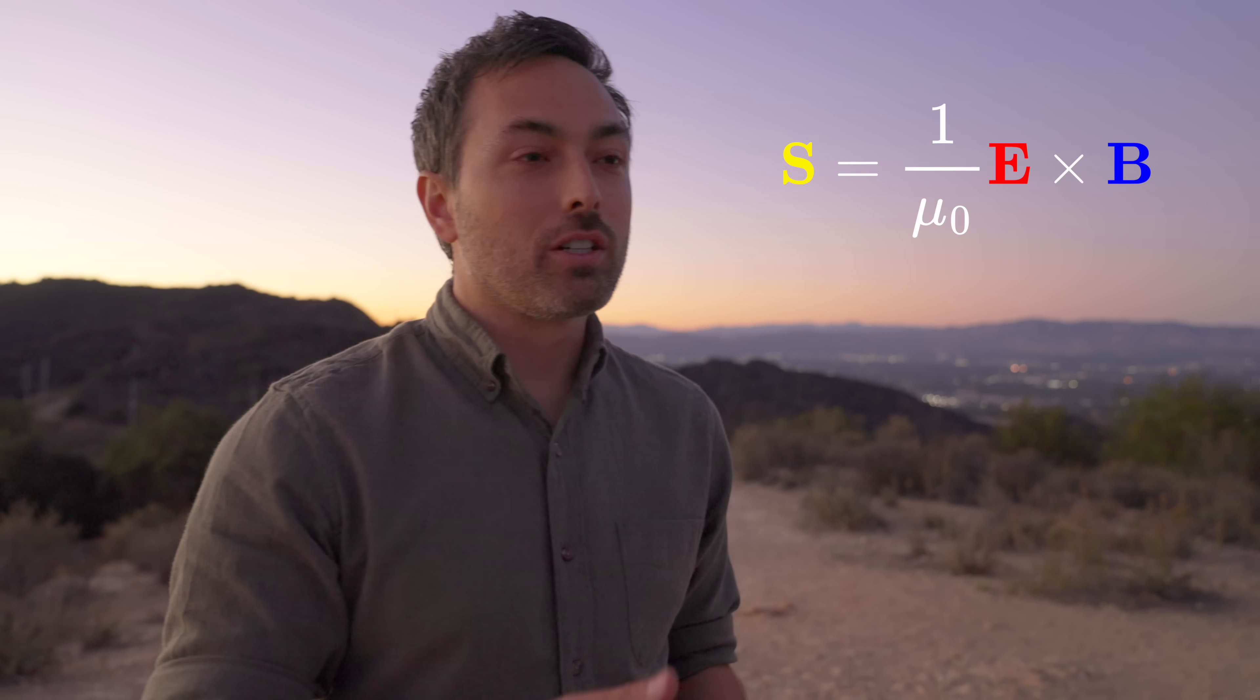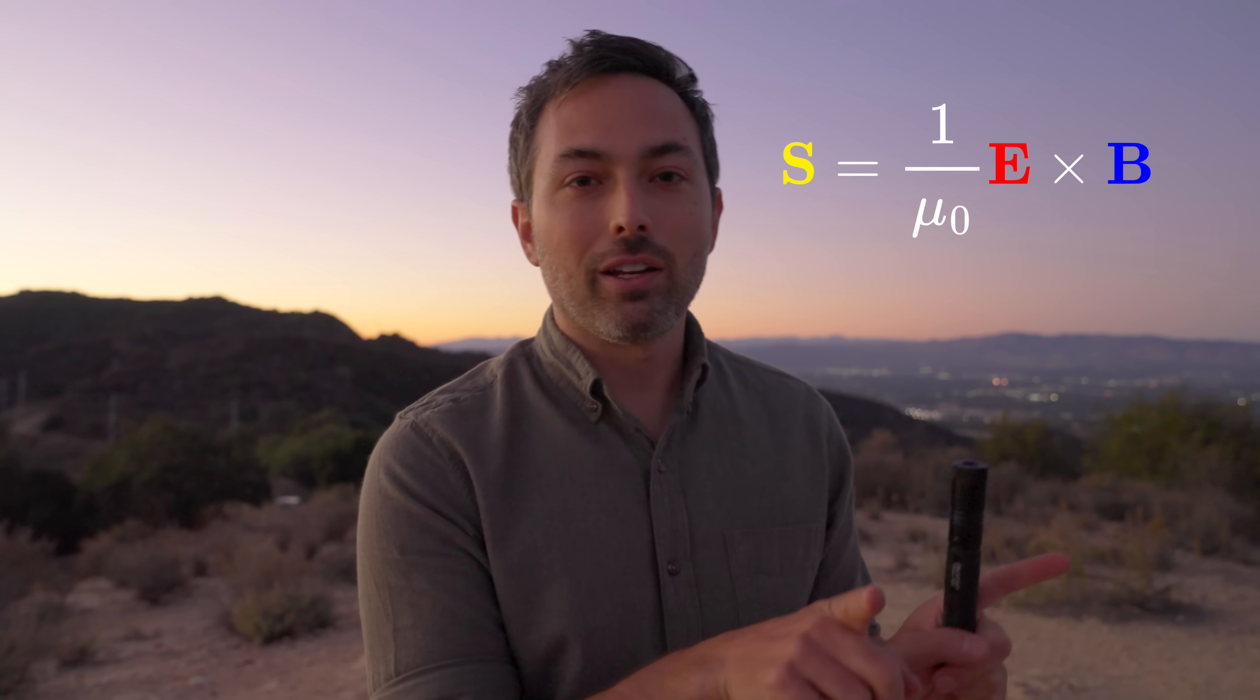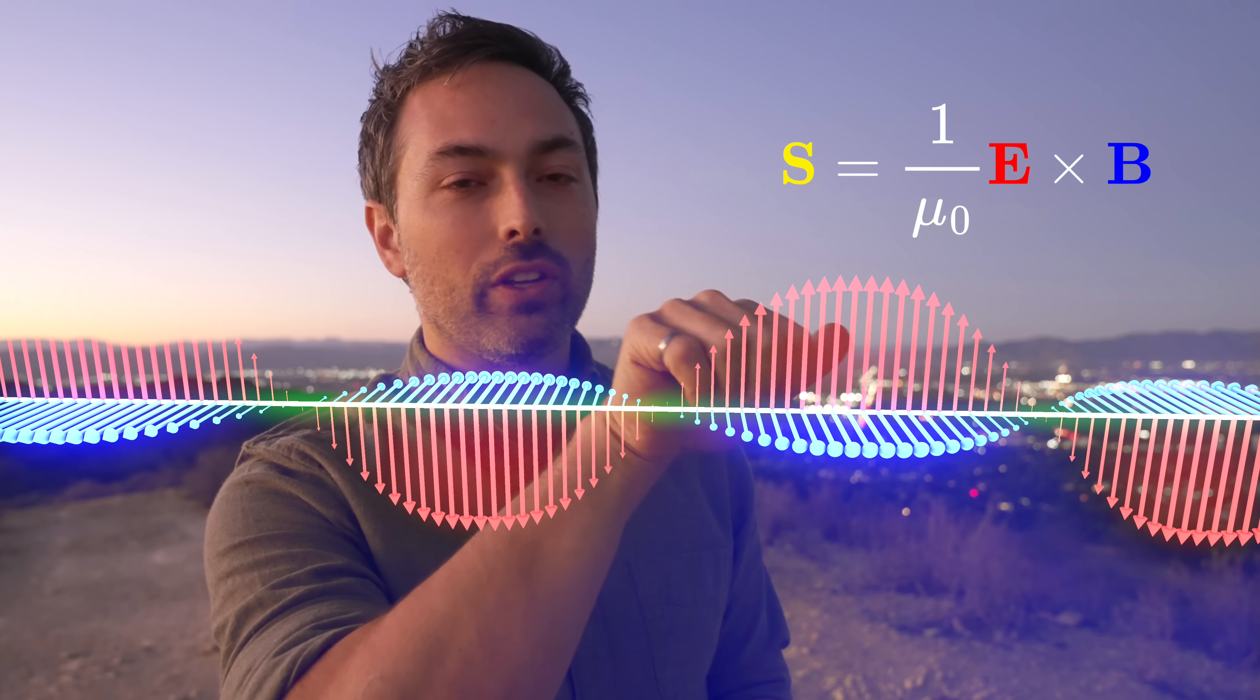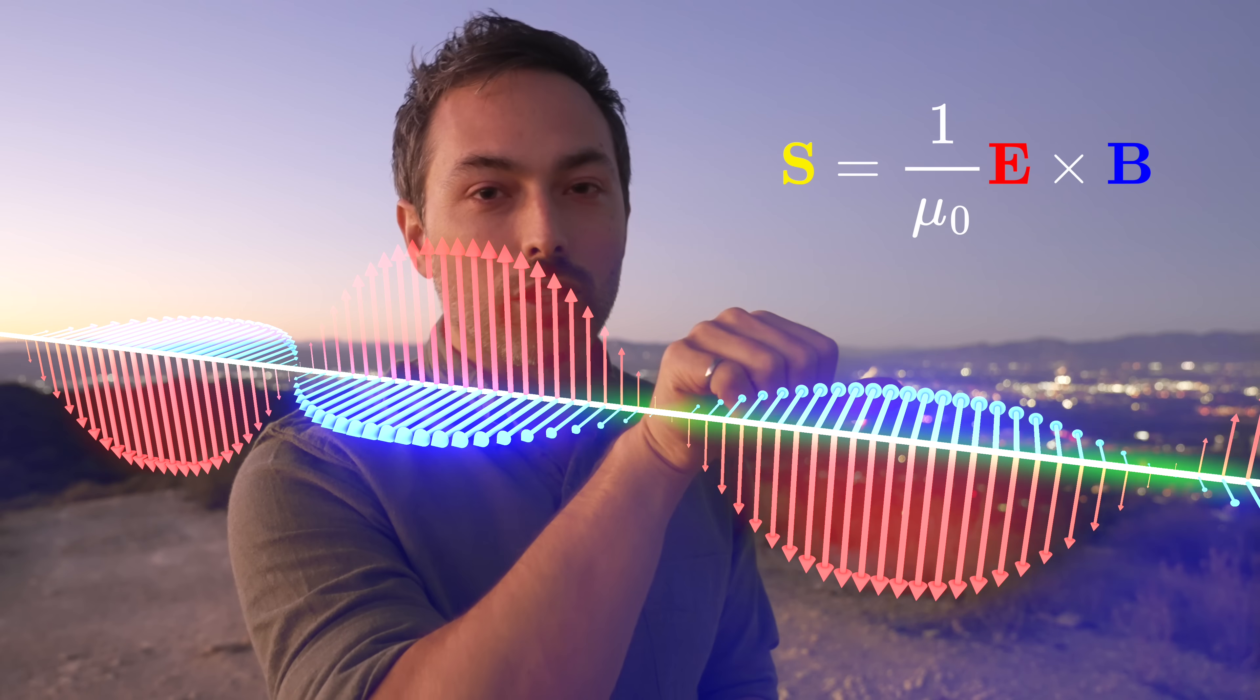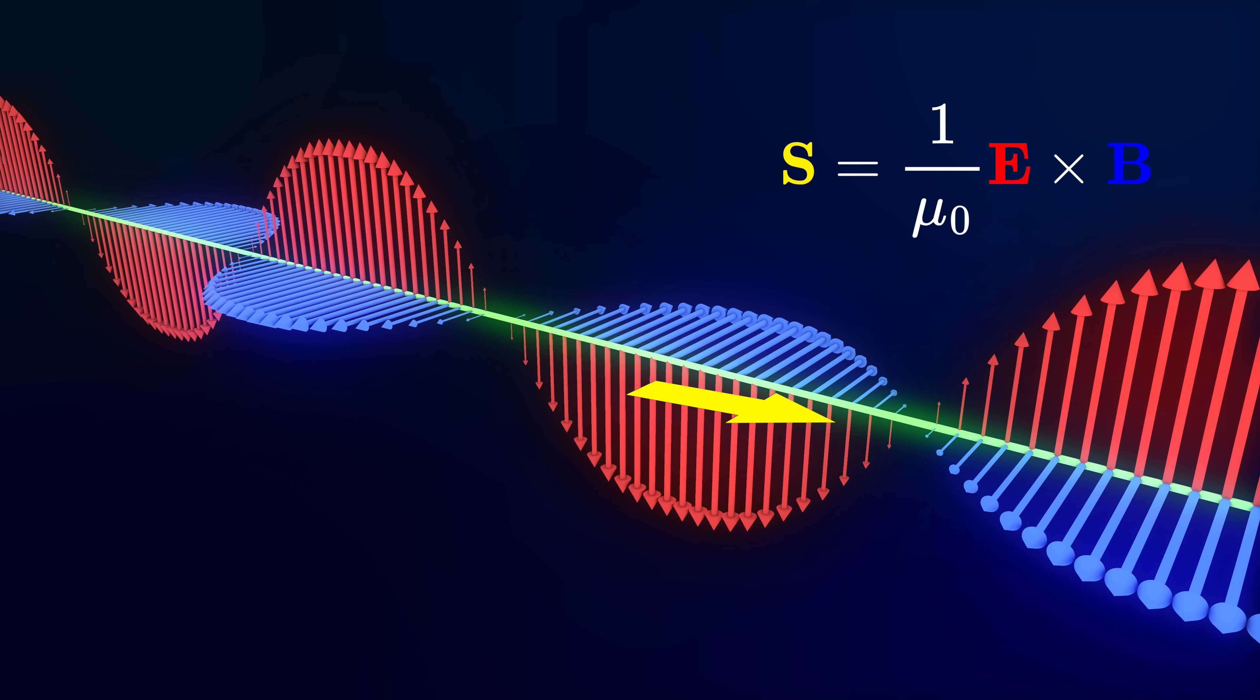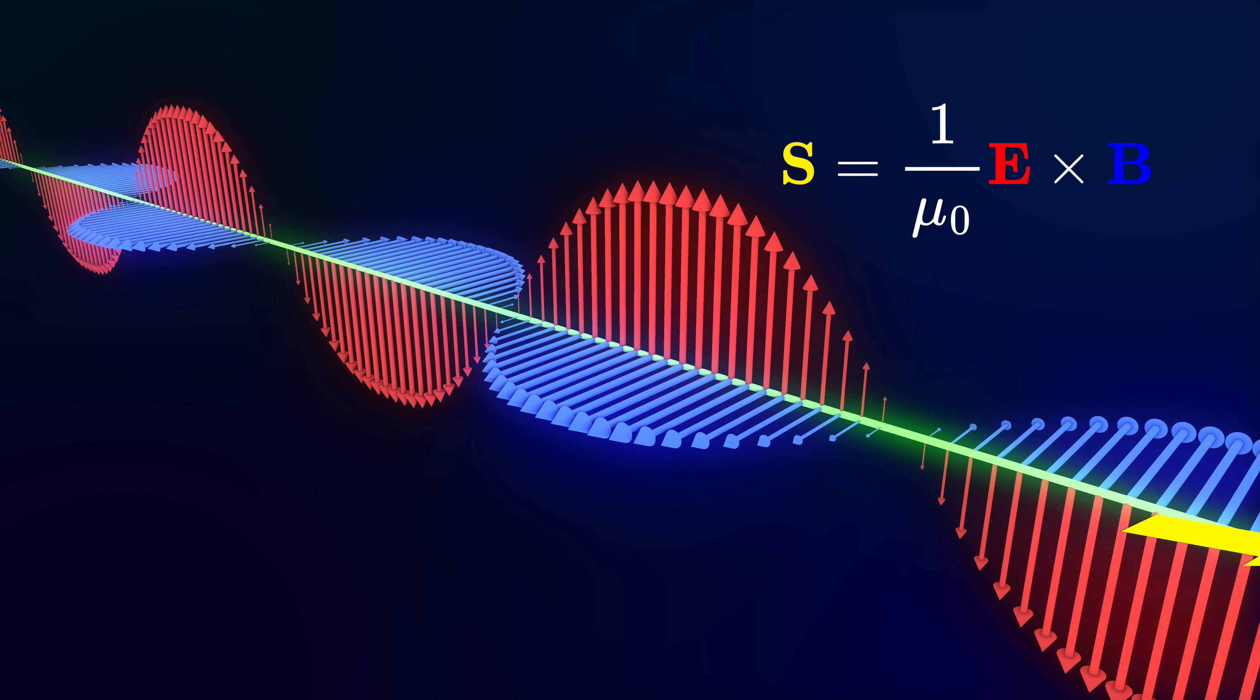Now the cross product is just a particular way of multiplying two vectors together where you multiply their perpendicular magnitudes. And to find the direction, you put your fingers in the direction of the first vector, which in this case is the electric field, and curl them in the direction of the second vector, the magnetic field. Then your thumb points in the direction of the resulting vector, the energy flux. So what this shows us about light is that the energy is flowing perpendicular to both the electric and the magnetic fields and it's in the same direction as the light is traveling.